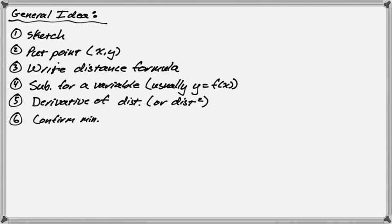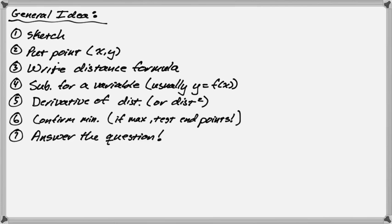From there, we are going to confirm that it's a minimum because it might not be. It could actually be a maximum. If it is a maximum, just test the endpoints and one of those has to give you the minimum. But usually you'll actually get a minimum on these problems. And then finally, you want to answer the question. So that's a process that we go through and an example. I hope you found this helpful. And good luck.